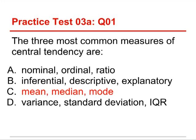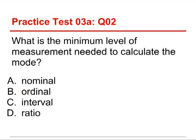Number two: what is the minimum level of measurement needed to calculate the mode? The choices are nominal, ordinal, interval, and ratio. The answer is nominal. The mode only needs a category, and nominal is the most basic variable that simply indicates category membership without adding anything else. You can say which one has the mode by which one is the most frequently occurring.